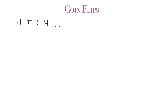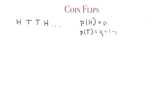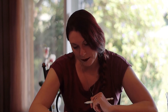In this sequence of flips, there is a probability of coming up heads — we'll call that little p. And there's a probability of coming up tails, which we title q. But q is just one minus p, since there are only two events and both probabilities have to add up to one.